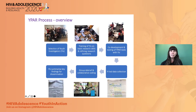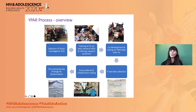We also wanted to recognize the important expert role that adolescents can play in research and programming. Our YPAR project followed six steps: the first was selecting youth investigators, the second was training youth investigators, the third was co-developing and testing tools, the fourth was youth-led data collection, the fifth step was debriefing and collaborative coding, and the sixth was to summarize key findings for dissemination.